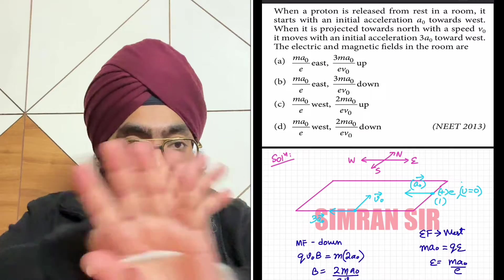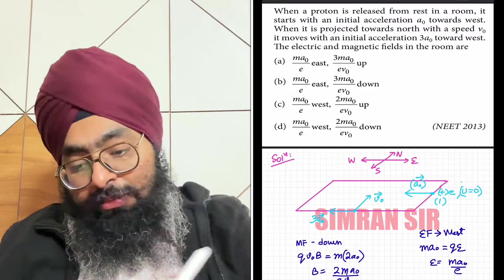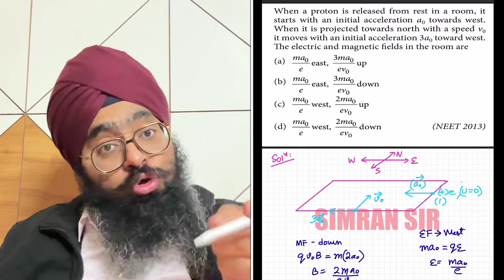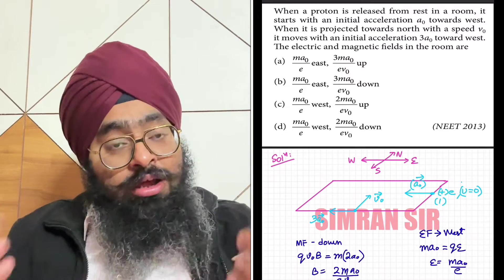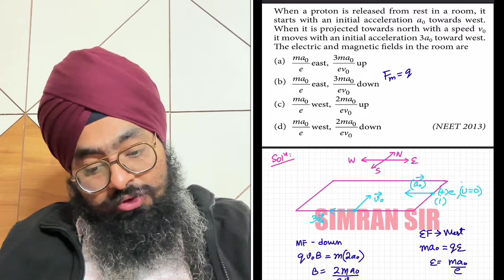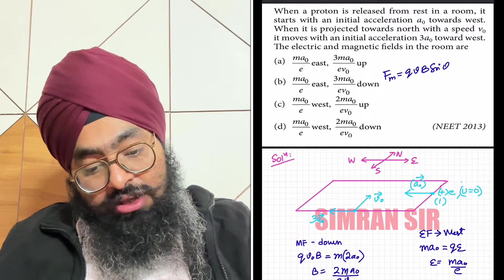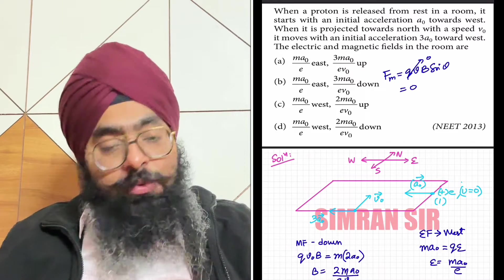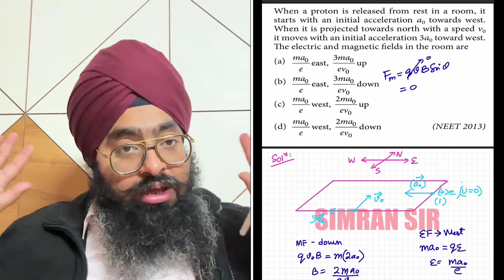When I release the charged particle from rest, magnetic field produces no force. Why not? Because magnetic force acts on a moving charge. The charge is not moving, so magnetic force is zero. We know that magnetic force is qvB sinθ. Velocity is zero, initial velocity is zero. So magnetic force is zero.